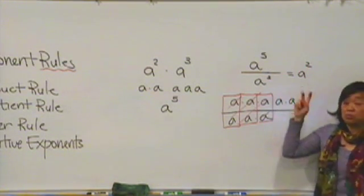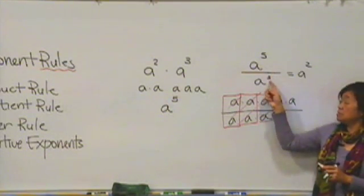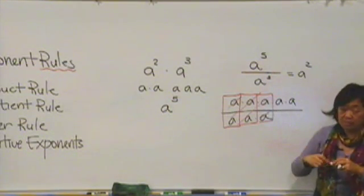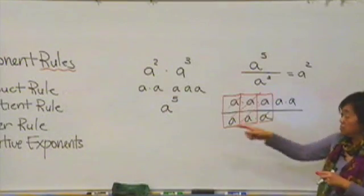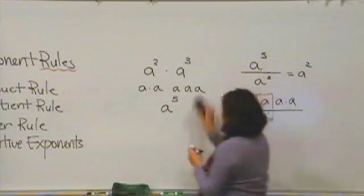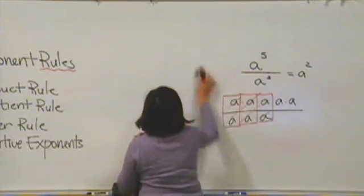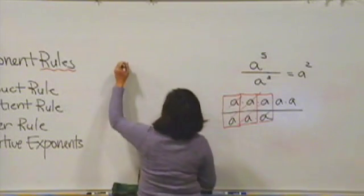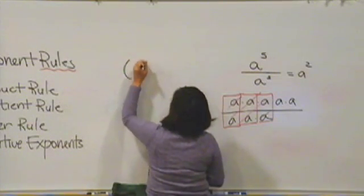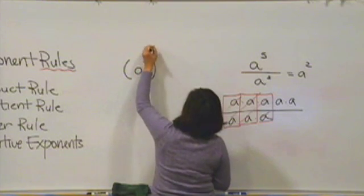And so, in a quotient, if you want a rule, the rule would say you just subtract the exponents. The last one I'd like to review with you is the power rule. So, let's take a look at a power. That would be something like this: a to the fourth to the third power.